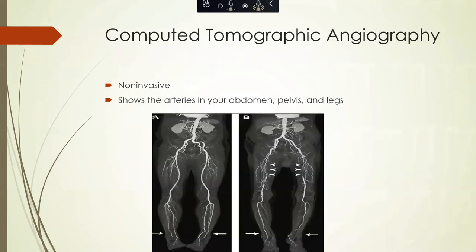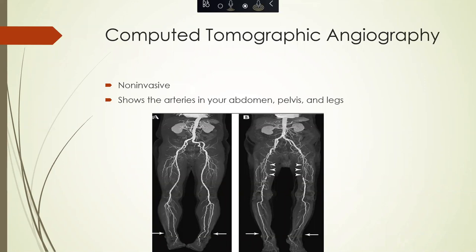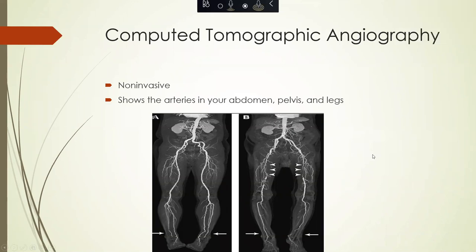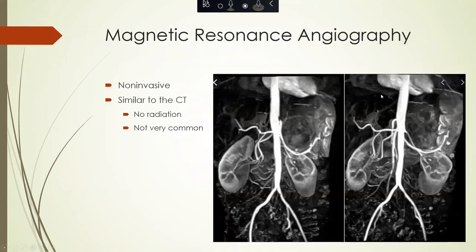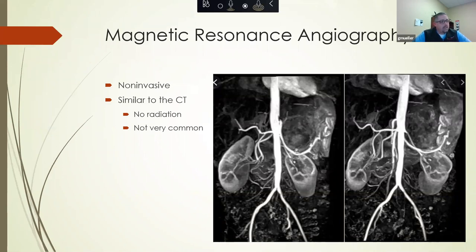Next would be a computed tomographic angiography — a CAT scan or CTA — also non-invasive. This will show all of the arteries from your abdomen all the way down to your feet and will be able to pick up blockages, as depicted by the arrows in the picture on the right. Lastly, there is an MRI or MRA — a magnetic resonance angiography — which is not often used. It's similar to a CAT scan except there is no radiation with an MRA.